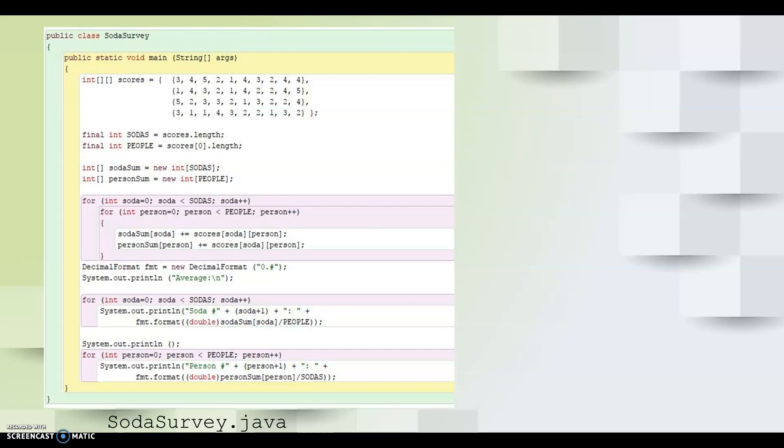More generally, each row holds the responses that all students gave for one particular soda flavor, and each column holds the responses of one student for all sodas. The soda survey program computes and prints the average responses for each soda and each student. The sums of each soda and students are first stored in a 1D array of integers. Then the averages are computed and printed.